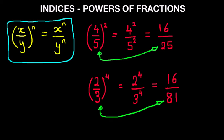And don't forget the rule: x over y to the power of n, simply multiply the brackets out. That becomes x to the power of n divided by y to the power of n.